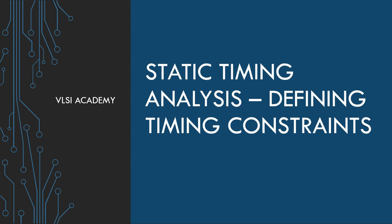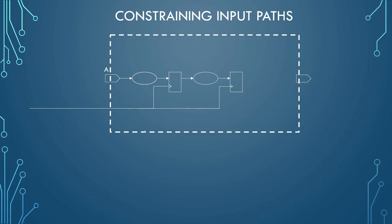If you want to view lecture 15, the link will be given in the description below. Let's get started. Let's say this is our design — this is an input port, there is a circuit inside your design, and this is your output port. Now let's say we have some circuit on the outside of your design, somewhere in another design which you cannot see, so this is just an assumed virtual circuit.